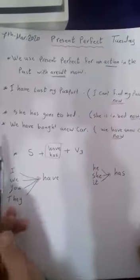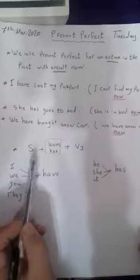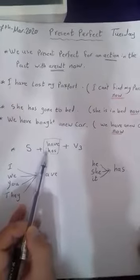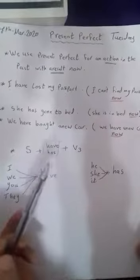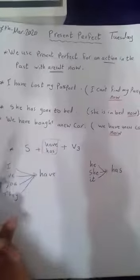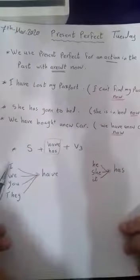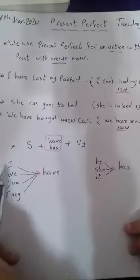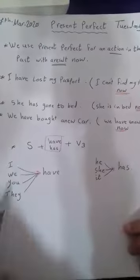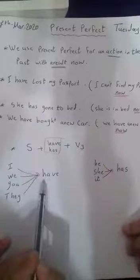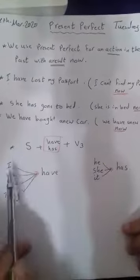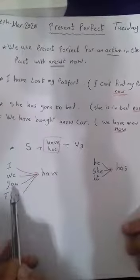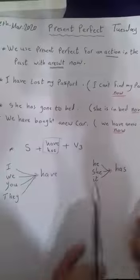Now, when we talk about Present Perfect, we have subject plus have or has plus verb three. Look at the subject. These are pronouns, plural pronouns: I, we, you, they. We use have. I have gone, for example. We have gone. You have gone. They have gone.